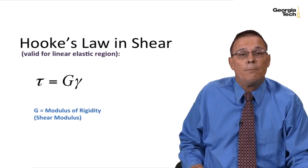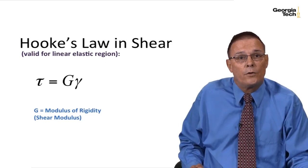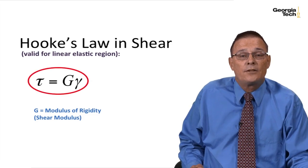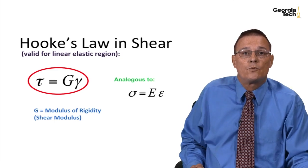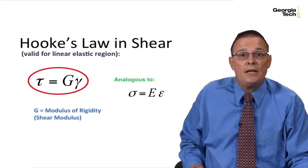And G is defined as the modulus of rigidity or the shear modulus. And this is completely analogous to Hooke's Law that we saw before for normal stress strain where sigma was equal to E epsilon.